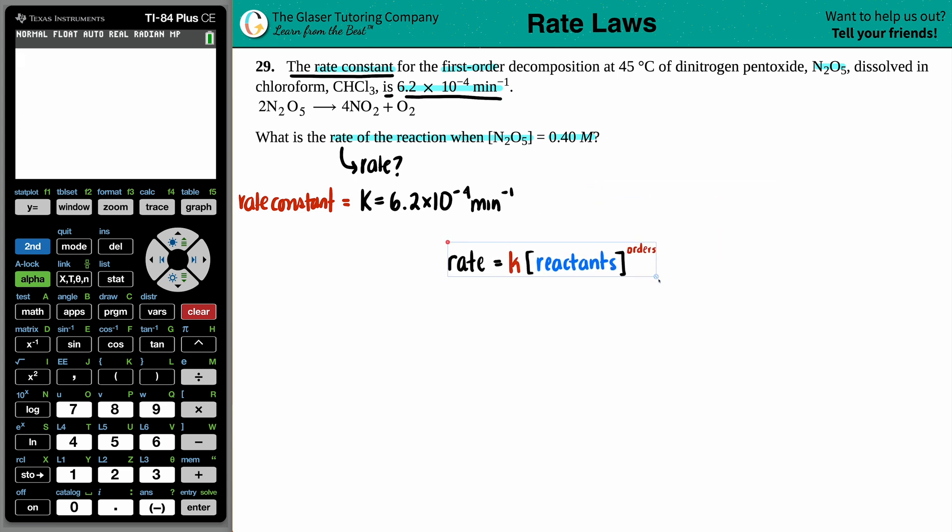And the general rate law formula is this right here. Maybe I'll put this over here. This is generalized, we have to make it for our specific reaction. So in this case, our rate law would be the rate equals the K value, which is the rate constant. Now I'm just going to put a K here for now, but we know that we're going to throw that value in for K. And now it's the concentration of who? Who is the reactant? The reactant in this case is the N₂O₅. You only have one reactant.